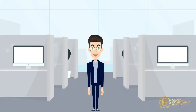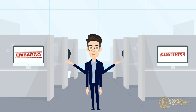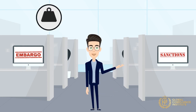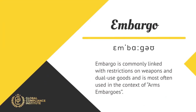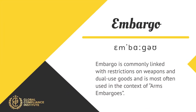Now we will discuss the definition of embargoes. Embargoes are similar to sanctions but are usually more severe and can represent a complete prohibition of all trade activities between countries. The word embargoes is commonly linked with restrictions on weapons and dual-use goods, and is most often used in the context of arms embargoes.